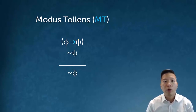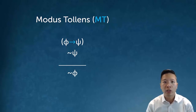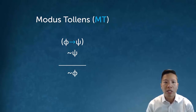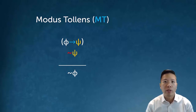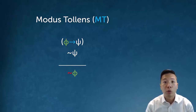The second rule we'll learn is modus tollens, also a conditional rule. If we start with a conditional statement phi arrow psi, and we know the negation of the consequent — so we know not psi — we can conclude the negation of the antecedent.